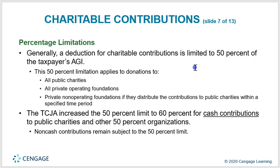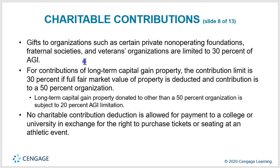The deduction for charitable contributions is generally limited to 50% of the taxpayer's AGI. The 50% limitation applies to donations to public charities, private operating foundations, and private non-operating foundations that distribute contributions to public charities within a specific time period. The Tax Cuts and Jobs Act increased the 50% limit to 60% for cash contributions to public charities. Non-cash contributions remain subject to the 50% limit. Gifts to certain private non-operating foundations, fraternal societies, and veteran organizations are limited to 30% of AGI. For contributions of long-term capital gain property to a 50% organization, the limit is 30% if full market value is deducted.